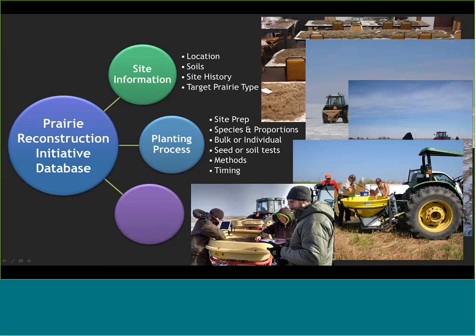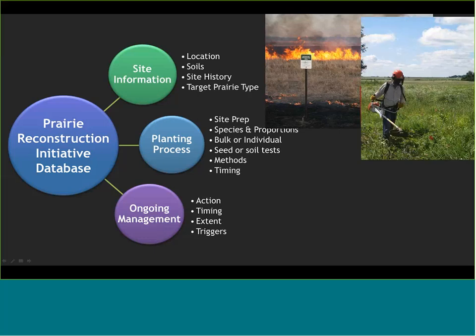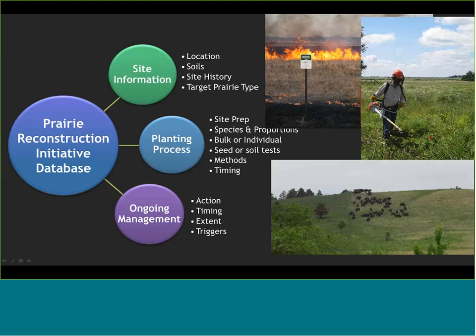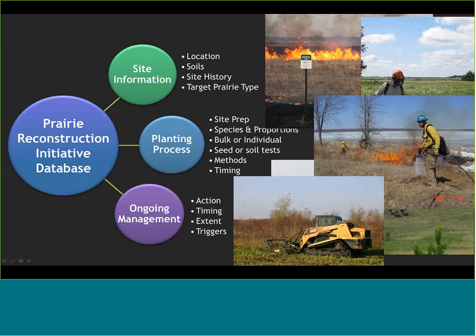The third piece is ongoing management. How we manage a planting through time is just as important as how we plant it. All ongoing management actions are recorded individually, including timing and extent. There's also a place to enter the trigger that caused you to take a particular action. You may realize this is not only a wealth of information to analyze, but an archival location for you to document what you did on the site — so you can always go back and refer to what you did on any given site.